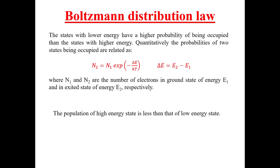To understand stimulated emission, it is necessary to know the population of various energy states of an atom. The population of energy states is given by Boltzmann distribution law, which quantitatively relates the probabilities of two states being occupied, expressed as n2 = n1 · e^(−ΔE / kT).